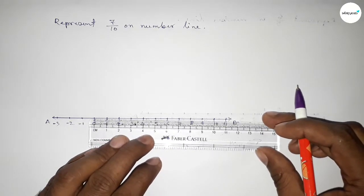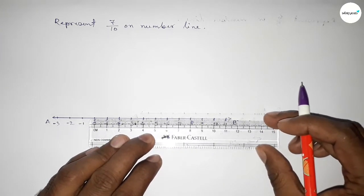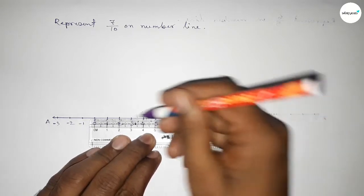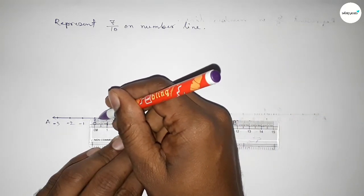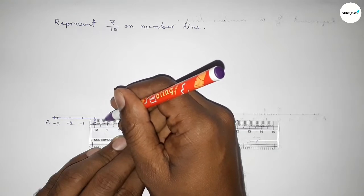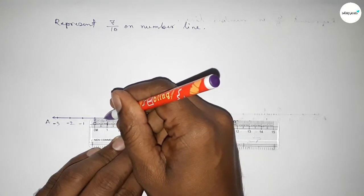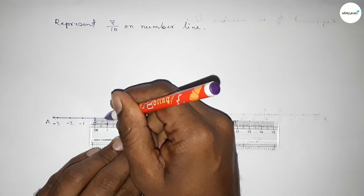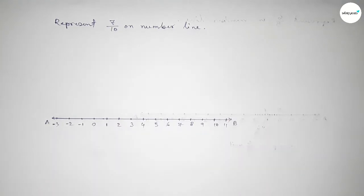So the length of each part equals 0.1 unit. So this is between 0 to 1, so this is 1, 2, 3, 4, 5, 6, 7. So this is 0.7 or 7 over 10 on the number line.